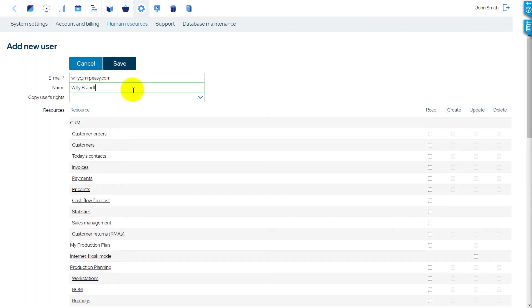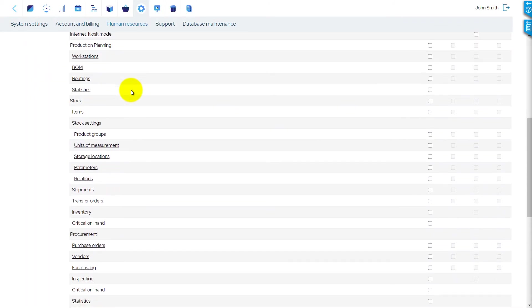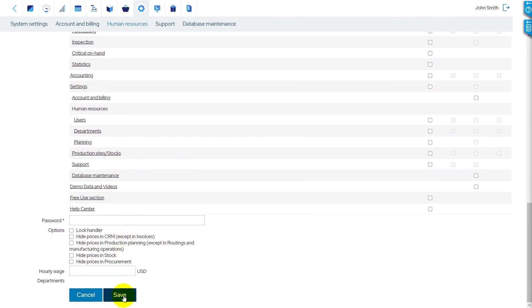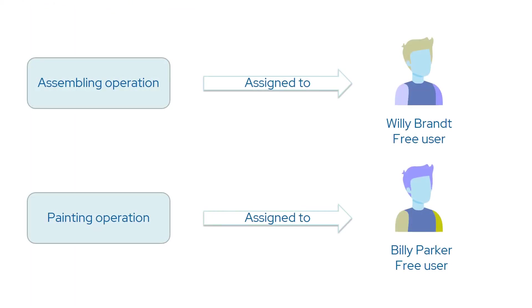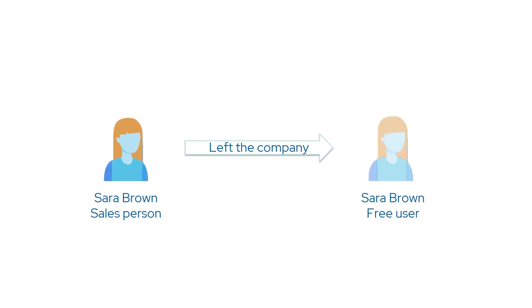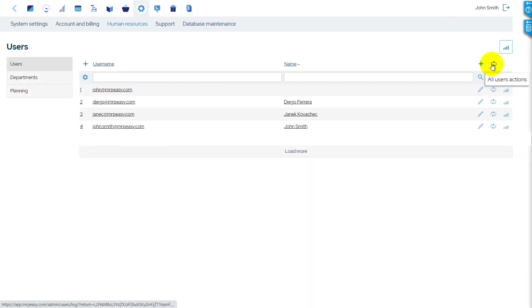You can also add so-called free users, which are users without any rights, with no access to MRPEezy. A free user is not billed and cannot log in, but can be assigned manufacturing operations. This is useful when you wish to assign operations to workers with their names displayed in the system, or when a person has left the company and you wish to keep that user's history of actions — so you convert them to a free user by taking away all access rights.